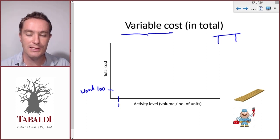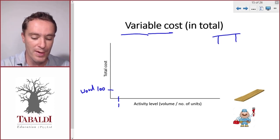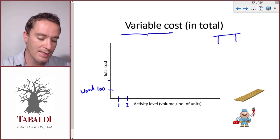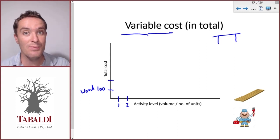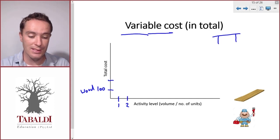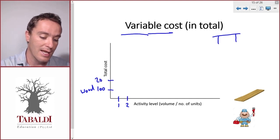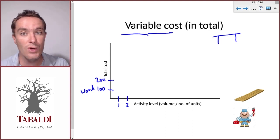How much would it cost us in total for wood if we make two tables? The second table would use the same amount of wood as the first table, they look the same, so it'll cost us an extra hundred, so in total two hundred for wood.